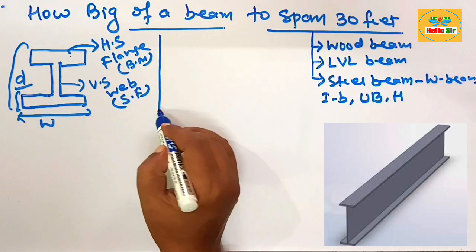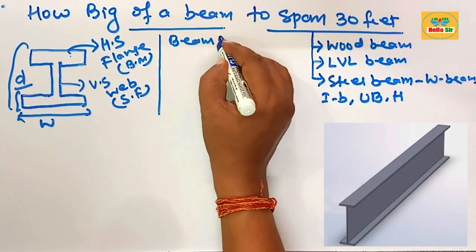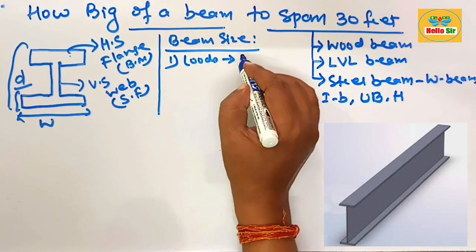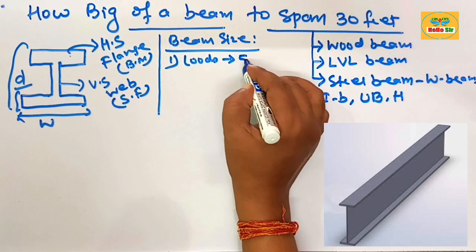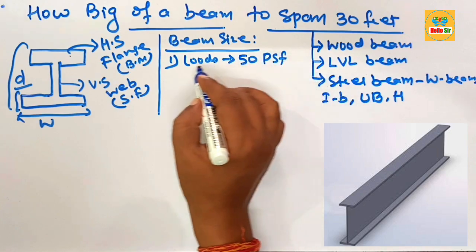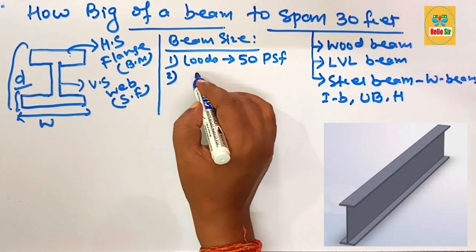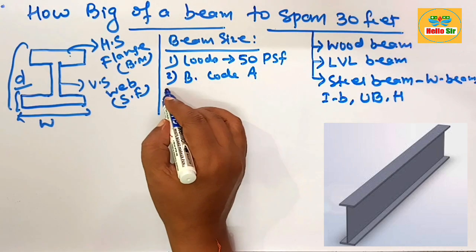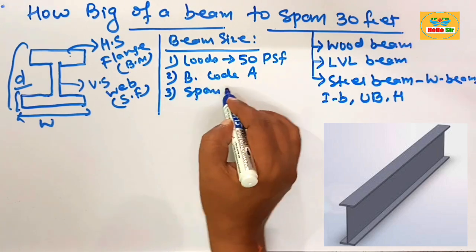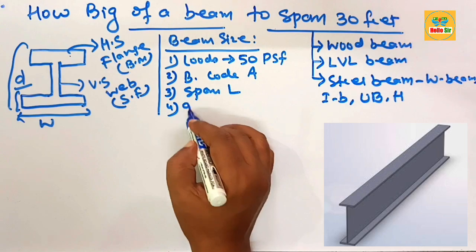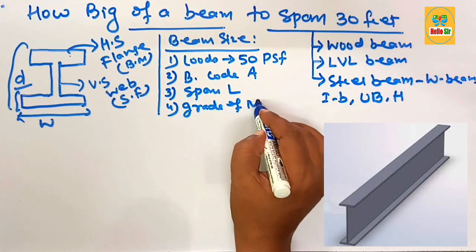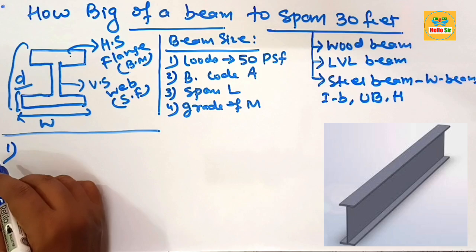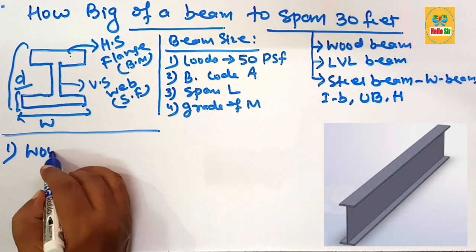Beam size depends on many factors. First, the load condition — residential load is typically about 50 pounds per square foot, considering live load and dead load. Second, the building code in your area suggesting a beam size. Third, the span length of the beam. Fourth, the grade of material from which the beam is made. These are the several factors that decide beam size, but for general purposes, we recommend the following.